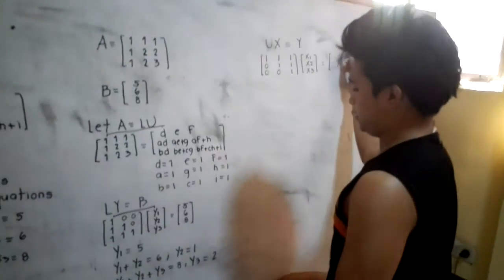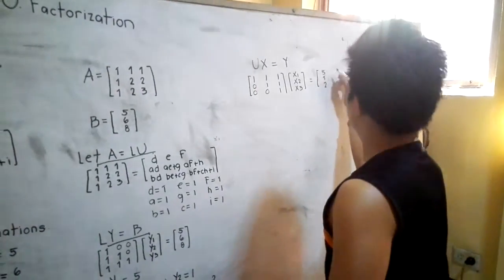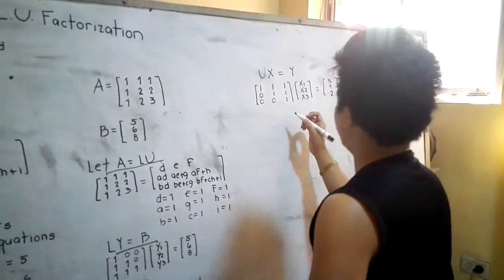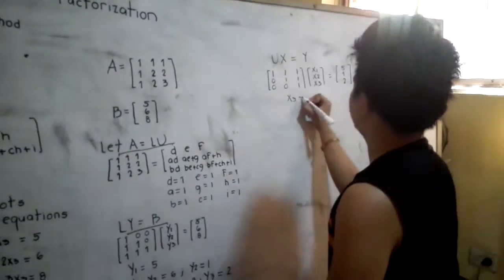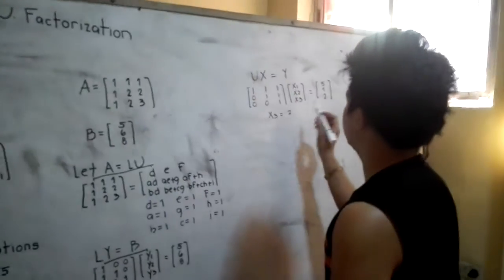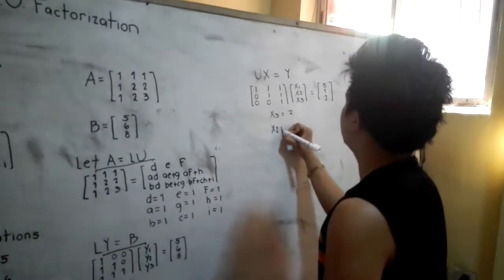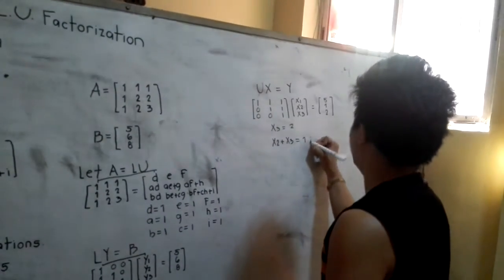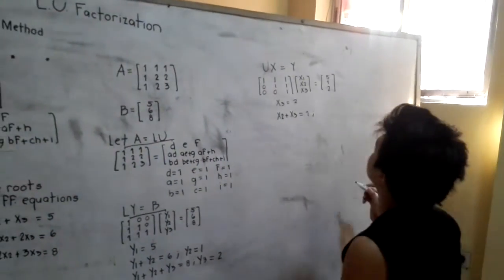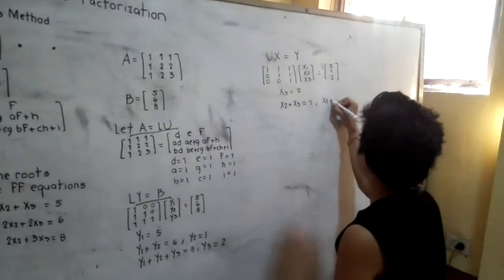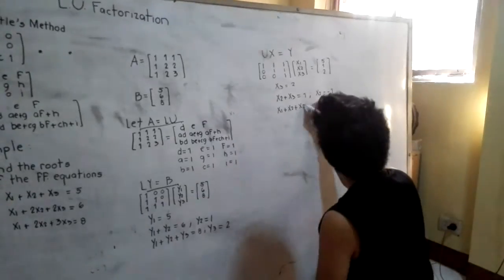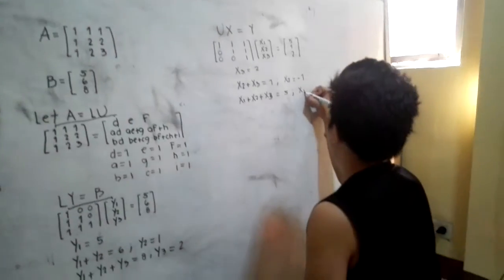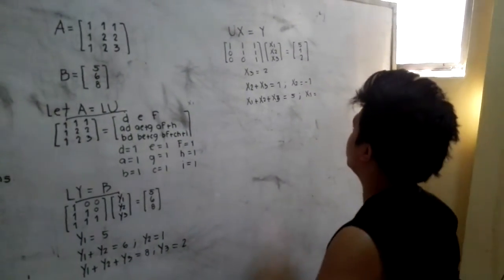The values of Y are 5, 1, and 2. I am going to solve for X sub 3 first because it has the least number of coefficients, so X sub 3 is equal to 2. Then we resolve for X sub 2: X sub 2 plus X sub 3 is equal to 1. By substituting the value of X sub 3, we get X sub 2 is equal to negative 1. Lastly, we solve for the value of X sub 1.